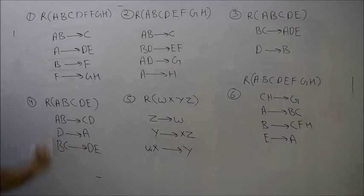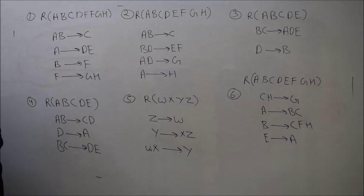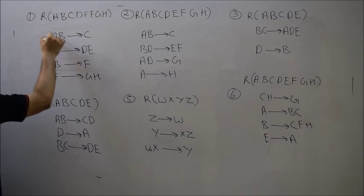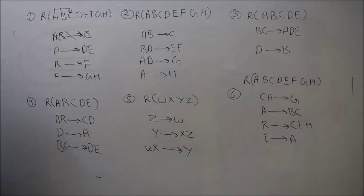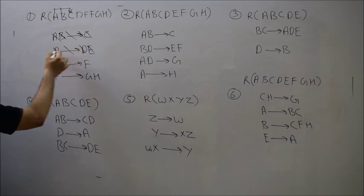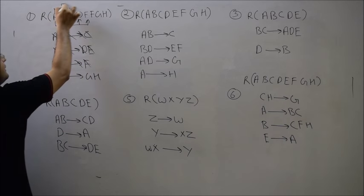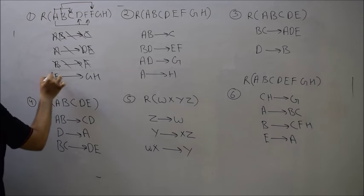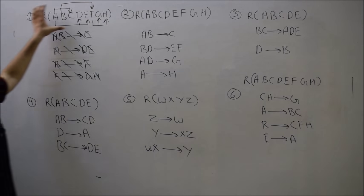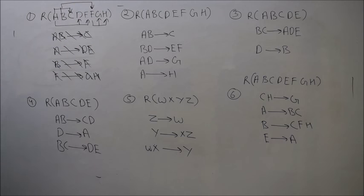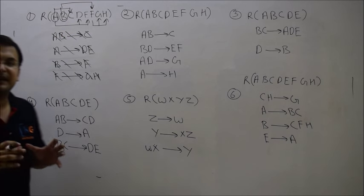There are four sets of functional dependencies. Let me first study them and convert them into an edge diagram. From AB we can find C — so AB to C. From A we can find D and E. From B we can find F. And from F we can find G and E. Now if you study these edge diagrams, you will find that there are two attributes — A and B — which do not have any incoming edge.